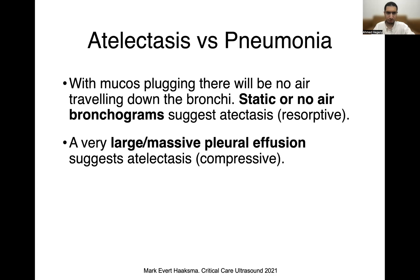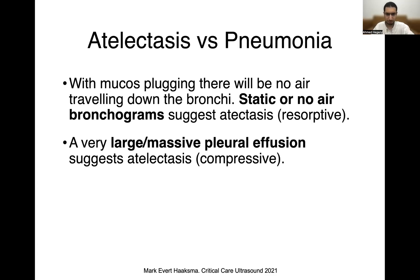On the other hand, if you have a very large or massive pleural effusion, that can compress the lungs and give you a compressive atelectasis. So there are two types of atelectasis: resorptive atelectasis, when you get resorption of all the air in the alveoli because a mucus plug prevents air going in and out of the lung, and compressive atelectasis, if a very large pleural effusion is compressing the lung.